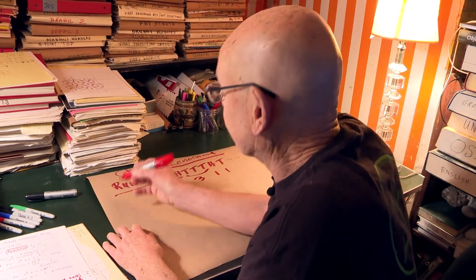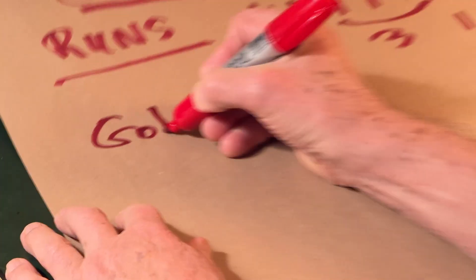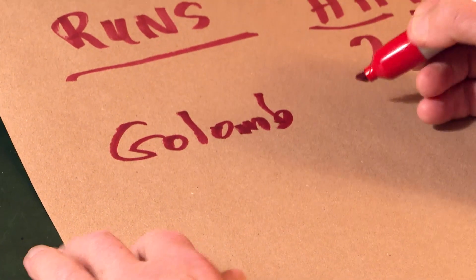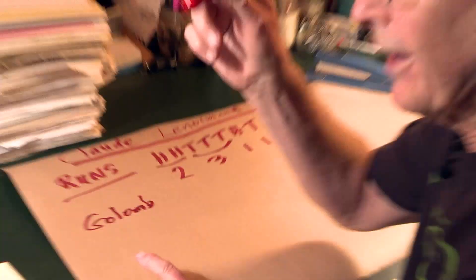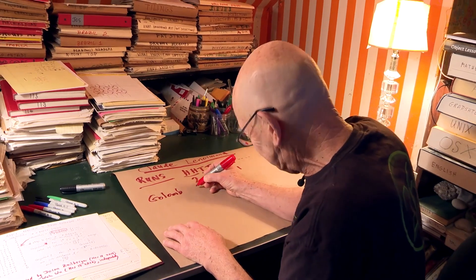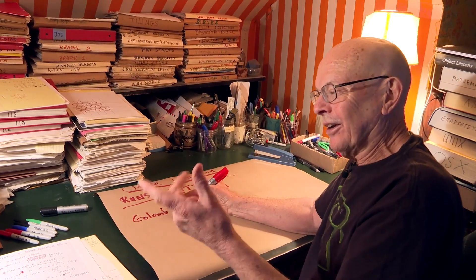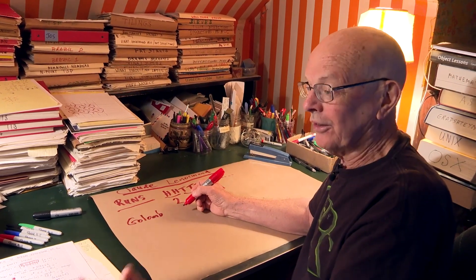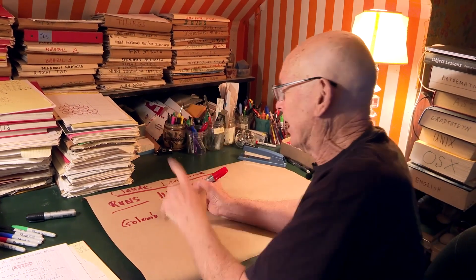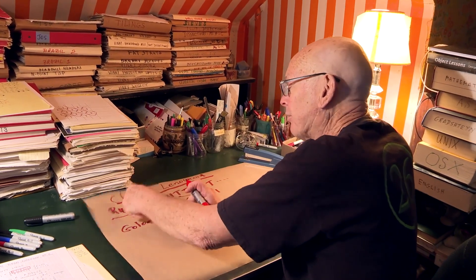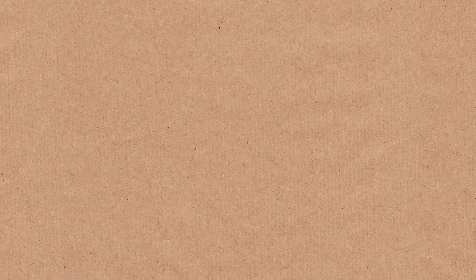So you remember in one of the earlier Numberphile videos you did, you mentioned a sequence of my old friend Sol Golomb. And this is distinguished by the fact that it's a sequence of numbers, it has the property that it's an increasing, or I should say, non-decreasing sequence. It keeps growing and it has the property that if you look at the runs length you get the same sequence.